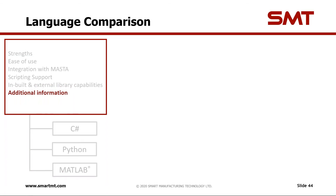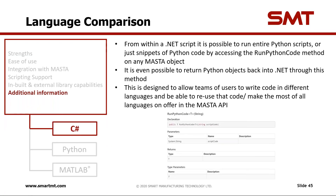The final section is some additional information. From within a .NET script, it's actually possible to run entire Python scripts or just snippets of Python code by accessing the 'run Python code' method on any MASTA object. You will need to have Python installed and go through all that setup, but it makes it possible to write code in multiple languages. Maybe you have a team of people who write code in different languages and you can reuse that code or make the most of all the languages the API offers. An example of this is using C# to manipulate a large amount of data and then plotting that using Python.